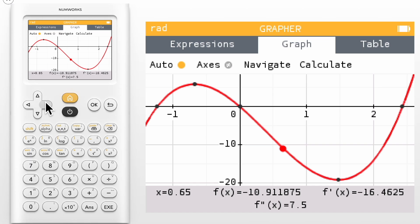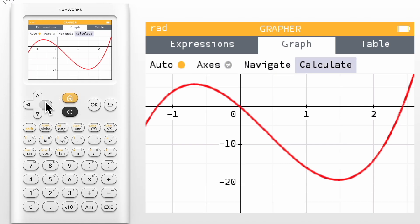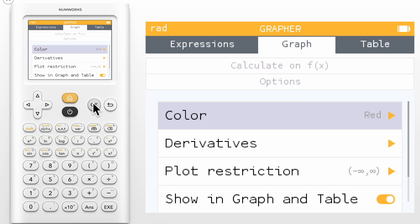To turn these values off, we need to access the options menu again. You can do this using the three dots in the expressions tab, the calculate menu or the graph tab, or the column header in the table tab.